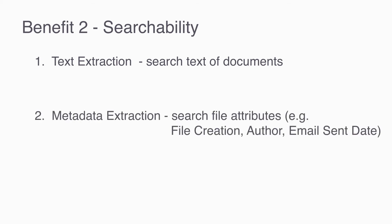Second is metadata extraction. This allows you to search through information about each file — for example, when was the file created, who created it, and when did someone receive an email? These are data points that are often critical pieces of information that processing extracts and makes available for searching.